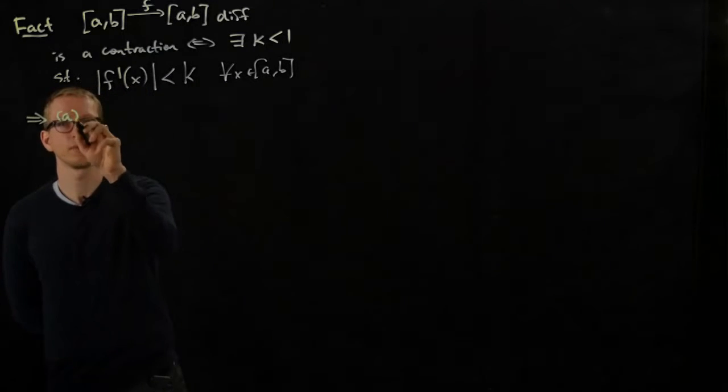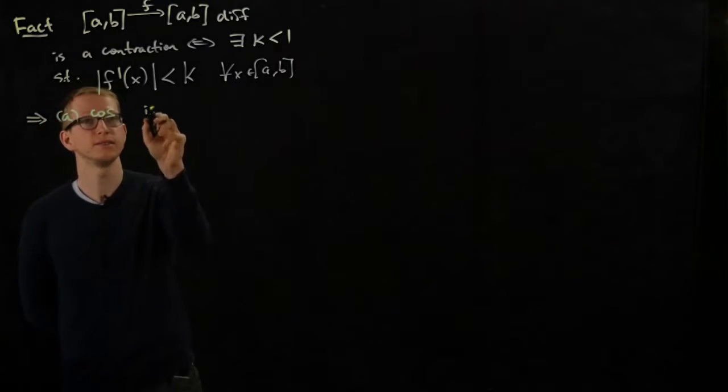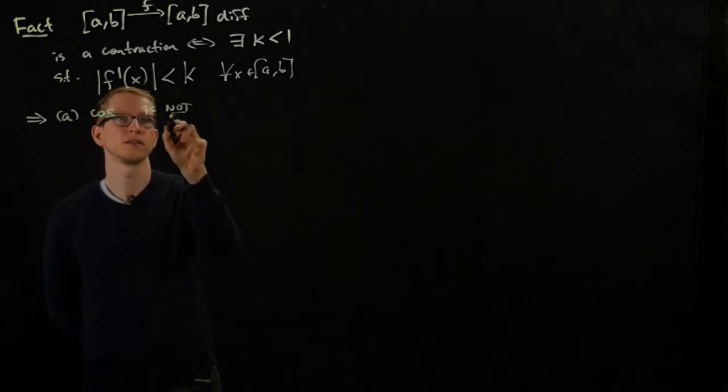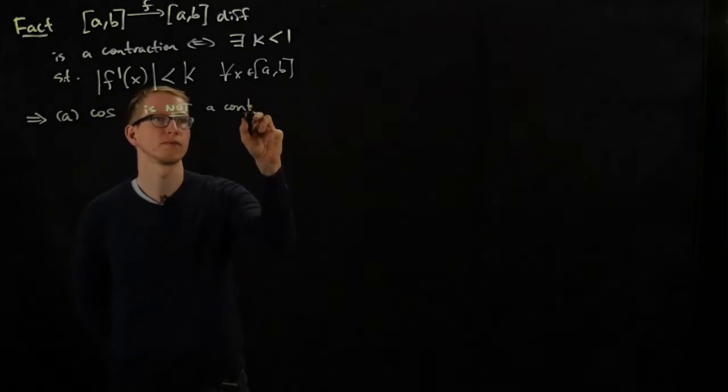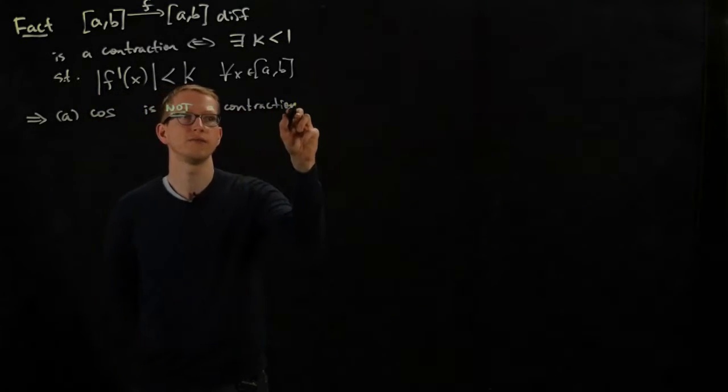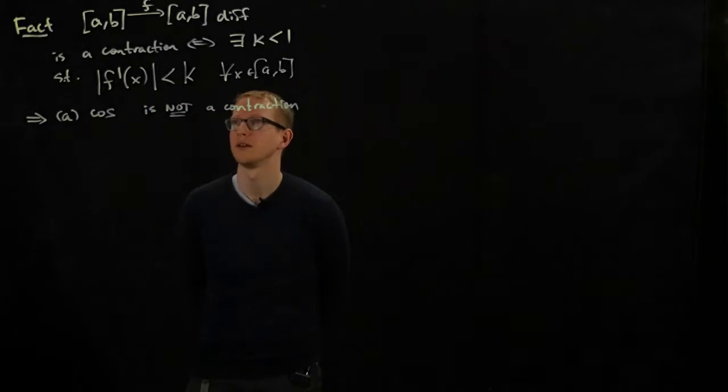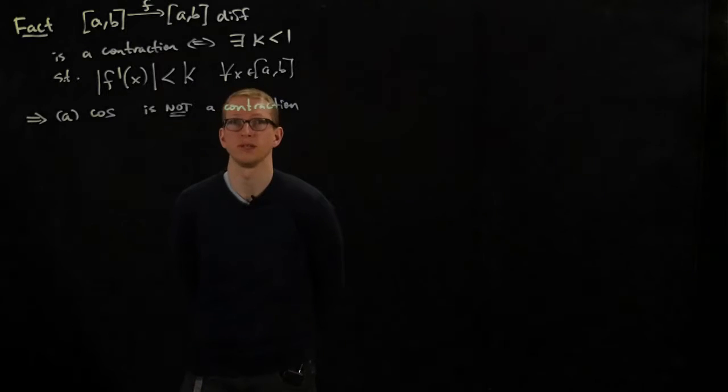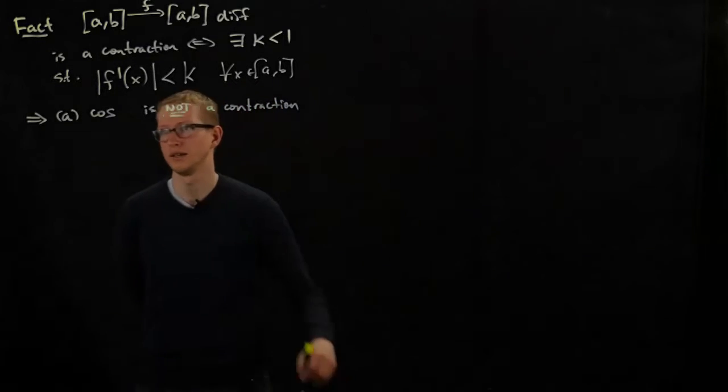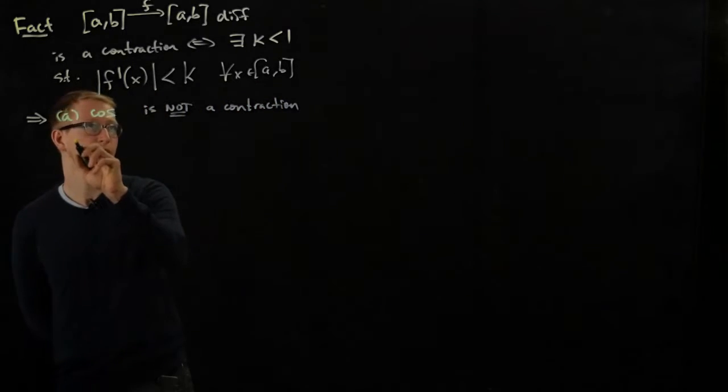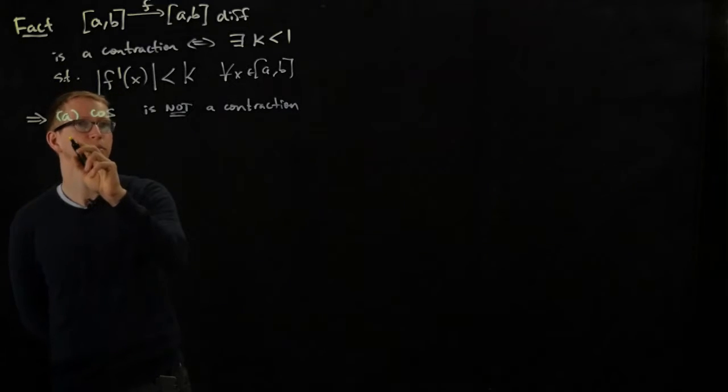For example, cosine is not a contraction. I'll leave these checks for you as exercises. All you have to do is calculate the derivative. Take the derivative, you get plus or minus sine, and that actually achieves its maximum at 1.